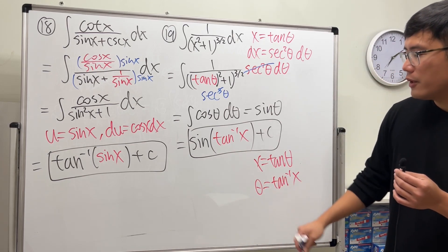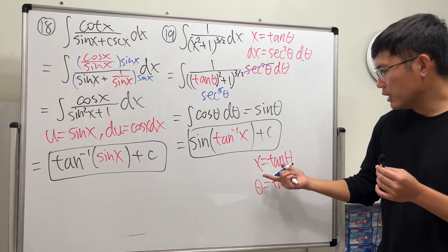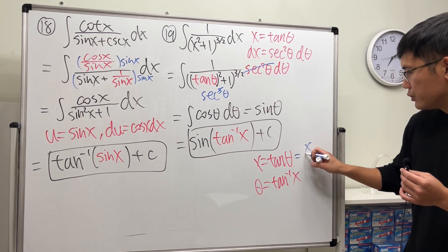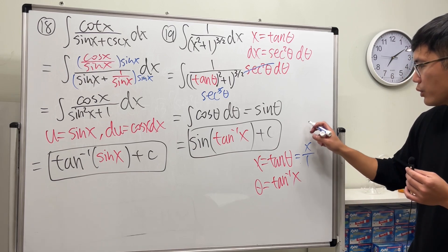So the way to take care of this is that we will just again draw a right triangle. Tangent theta is equal to x, which is the same as x over 1. So draw a right triangle.